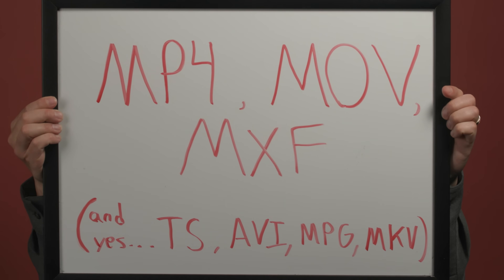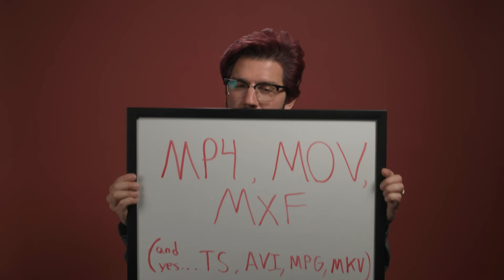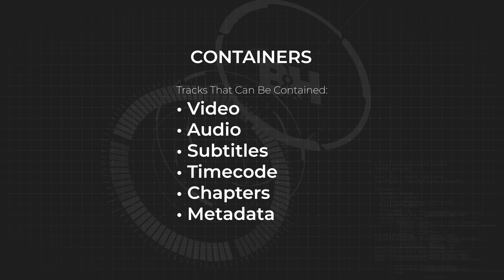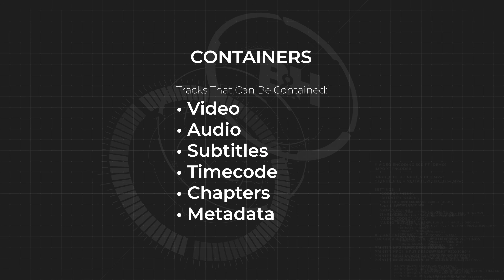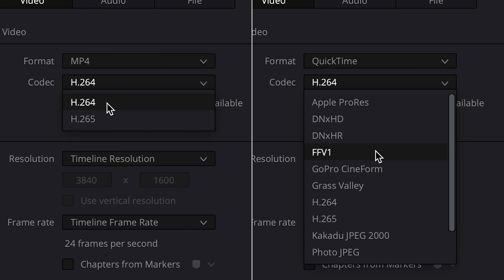You want to know what a codec isn't? Any of those file extensions you see — those are called containers, and they are not the same as codecs. This might sound pedantic, but if an editor asks you what format you shot something in, don't just tell them MOV. Containers do exactly that — they contain things like video, audio, subtitles, time code, chapter markers, and all sorts of metadata, and those things can be encoded in a wide variety of codecs.